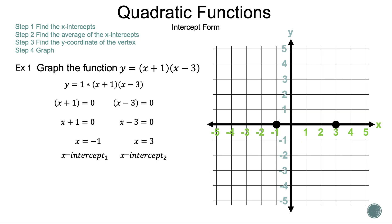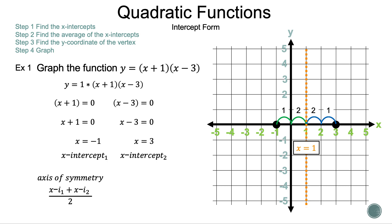The axis of symmetry is the key piece of information we haven't discussed yet. The points horizontally are equidistant from the axis of symmetry, so if we count from each plotted point until they meet, we find the axis of symmetry is x = 1. We can verify this algebraically by averaging the two x-intercepts: (−1 + 3) / 2 = 2 / 2 = 1.